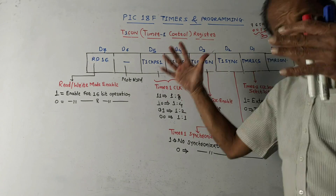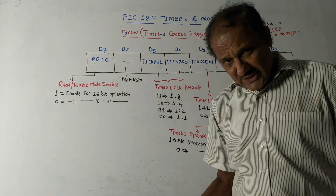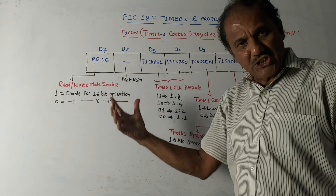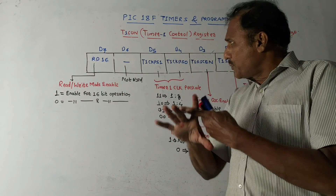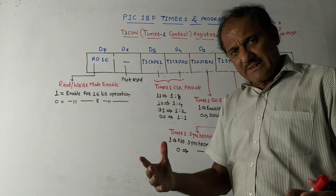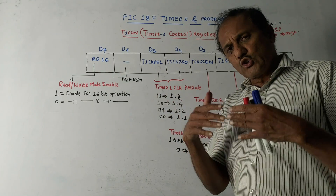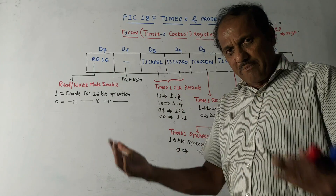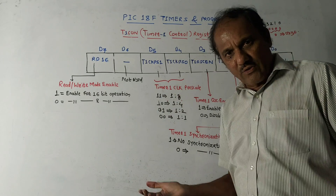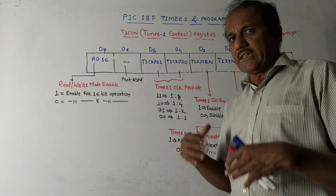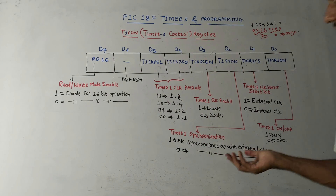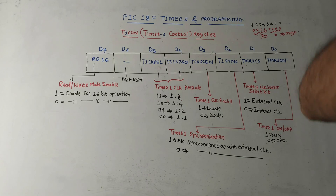If applications are asked along with this explanation, for almost all timers the application remains the same: they are used to produce time delays, generation of a square wave signal, generation of a pulse width modulation signal, and so on.